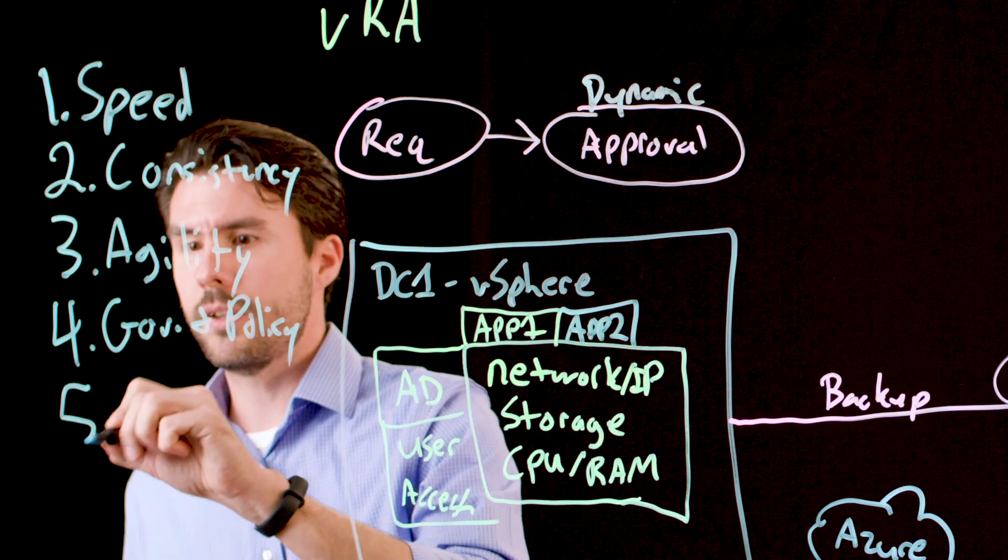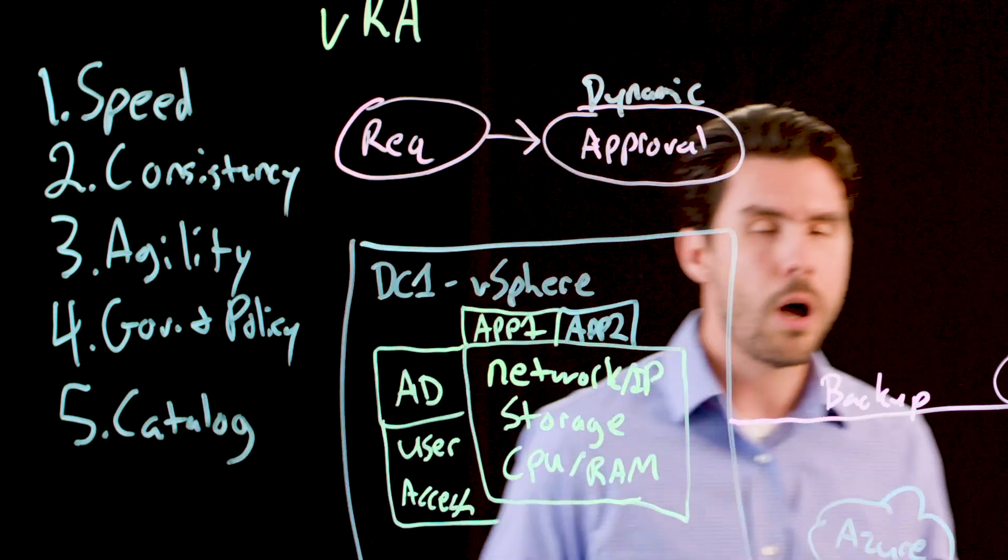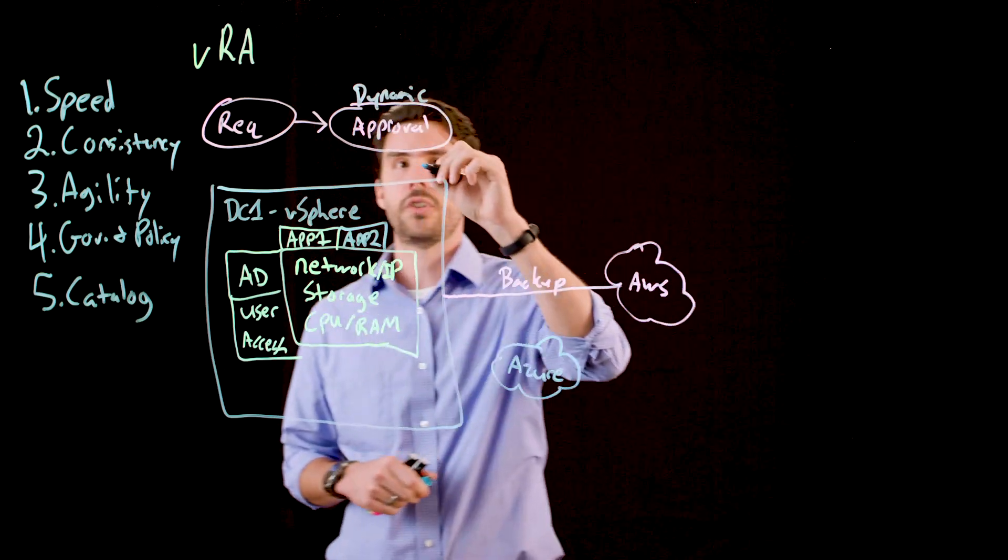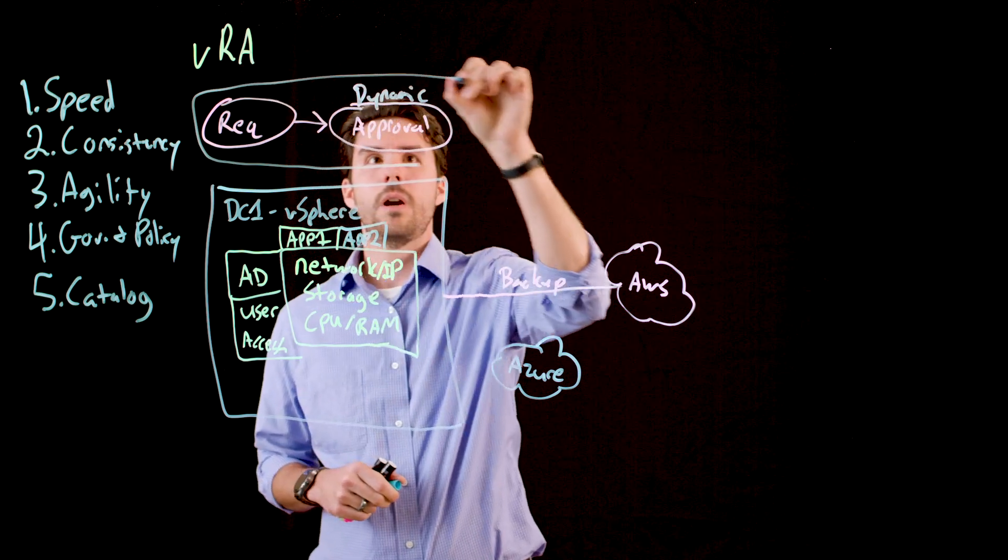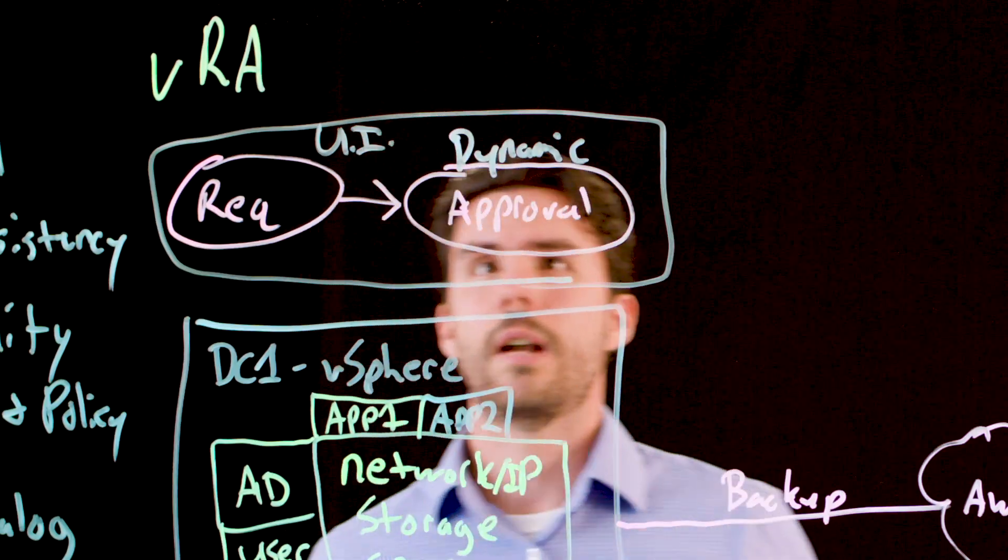The fifth thing VRA brings to the table is a services catalog. All this automation is awesome, but if you can't present it to the user in a format that they like, which is going to be an app store-like environment, where they can easily consume these resources, you're not getting the full value out of your automation service.